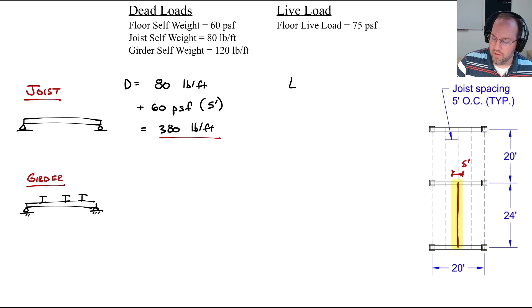For my unadjusted live load, I have 75 pounds per square foot again multiplied by that same width of five feet, and therefore this is 375 pounds per foot.